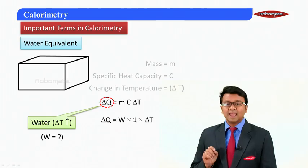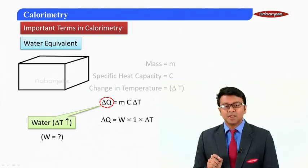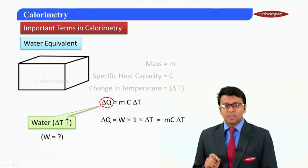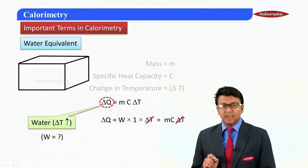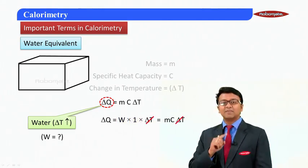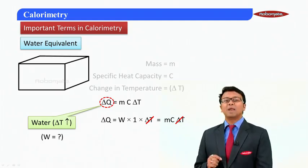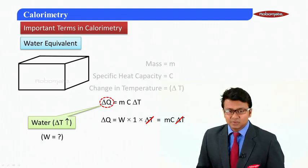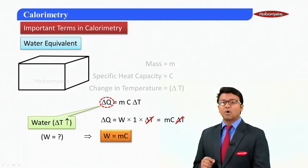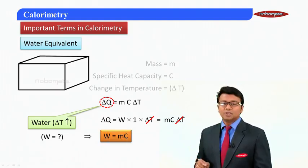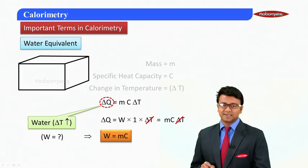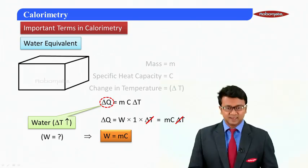So I can write down this ΔQ is nothing but equals to W × 1 × ΔT, where the ΔT will get cancelled from both sides of the equation. Hence I will get the value of my water equivalent equals to nothing but product of mass into specific heat capacity.